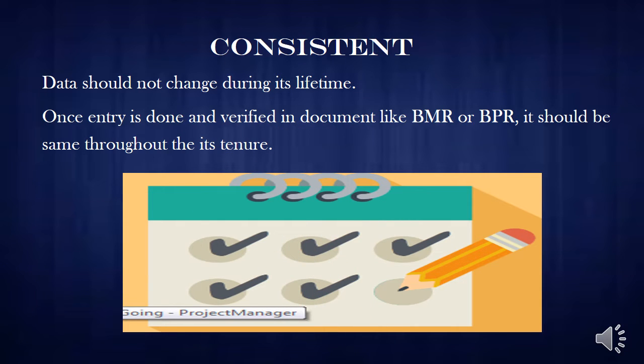Next is Consistent. Consistent refers to reproducibility — once data is generated, it should not get changed during its lifetime or tenure. Once an entry is done and verified in a document like a BMR or BPR, it should remain the same throughout the tenure.